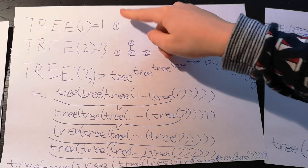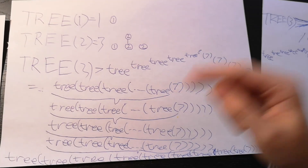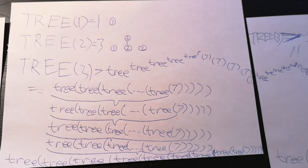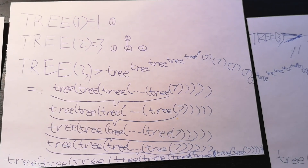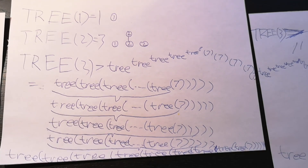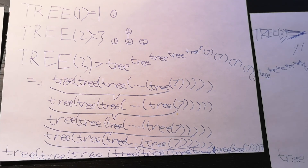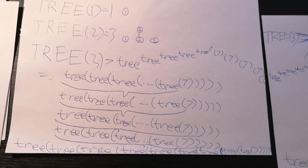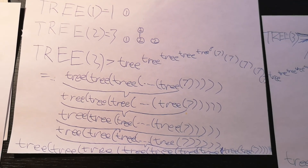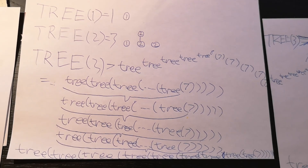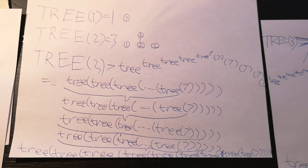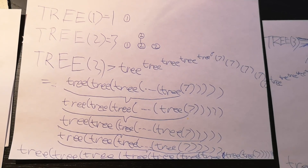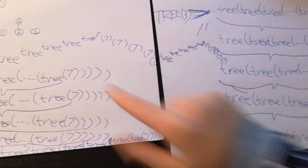Strong tree of one is one — it turns out this is the only game you can play. Strong tree of two is three, the longest game you can play. But strong tree of three is greater than: weak tree of weak tree of weak tree of... and so on... of weak tree of seven. How many trees? Weak tree of weak tree of... weak tree of seven, and so on, nested down — this monstrosity is still less than strong tree of three.